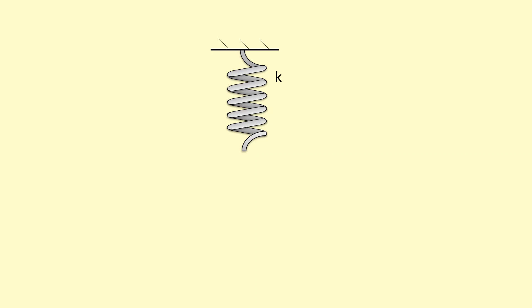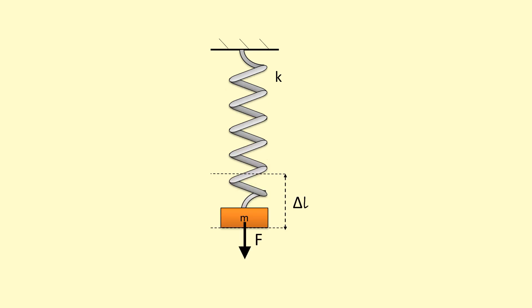Here we have a spring with a spring constant k. If I hang a mass on it, which will apply a force F — the weight mg — we can calculate the extension delta-l using Hooke's Law.